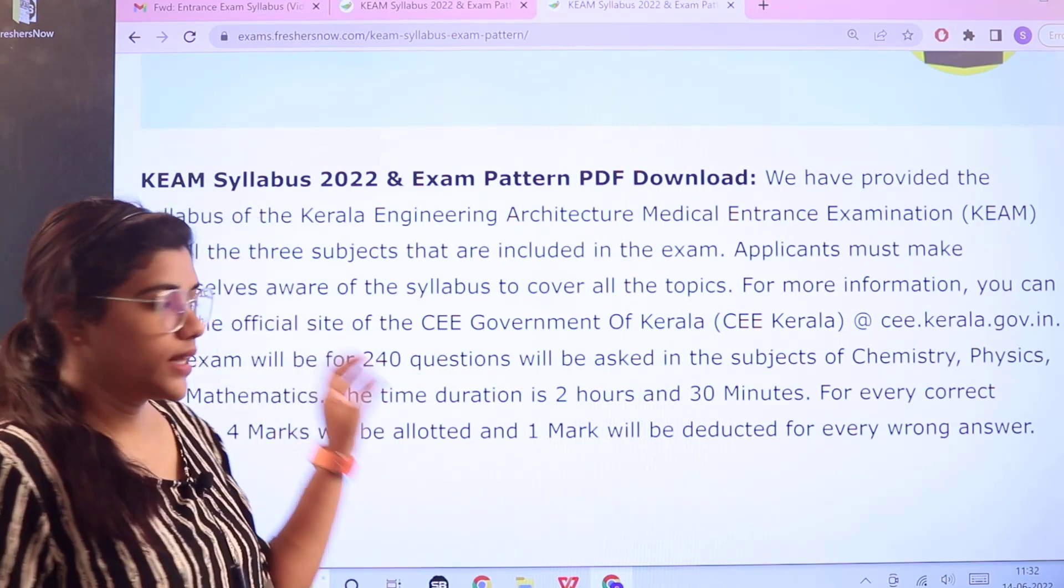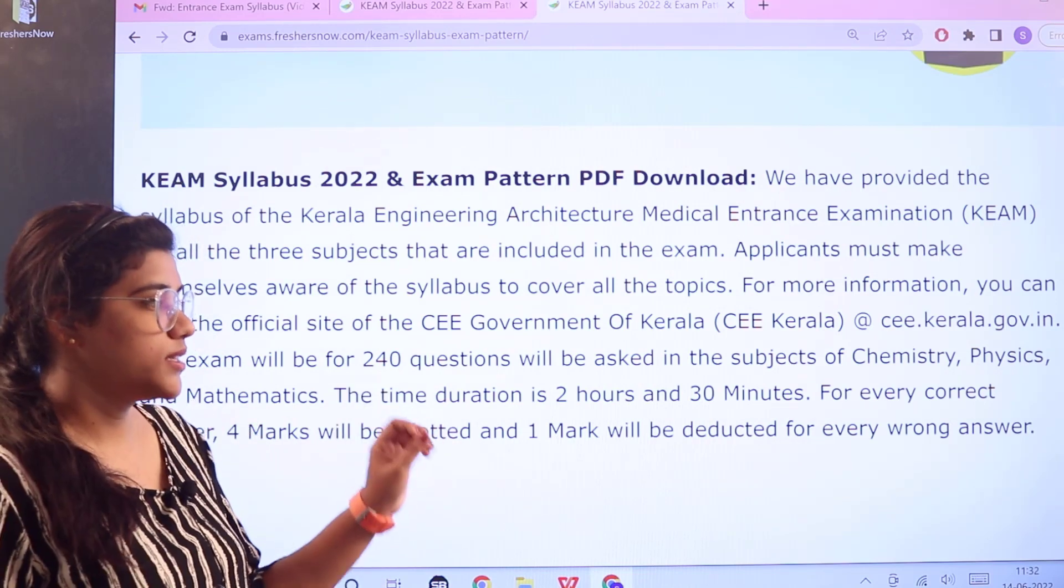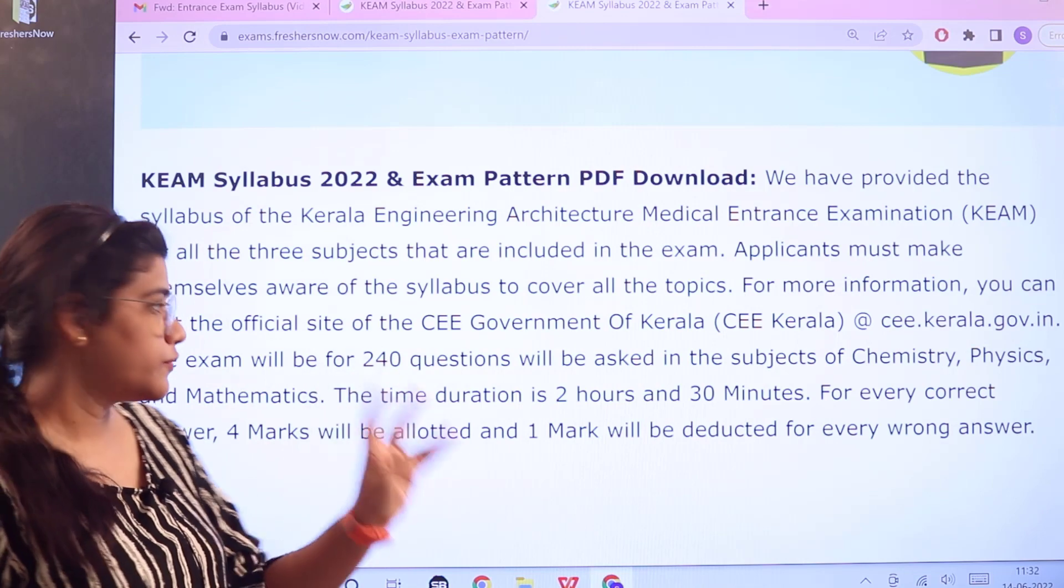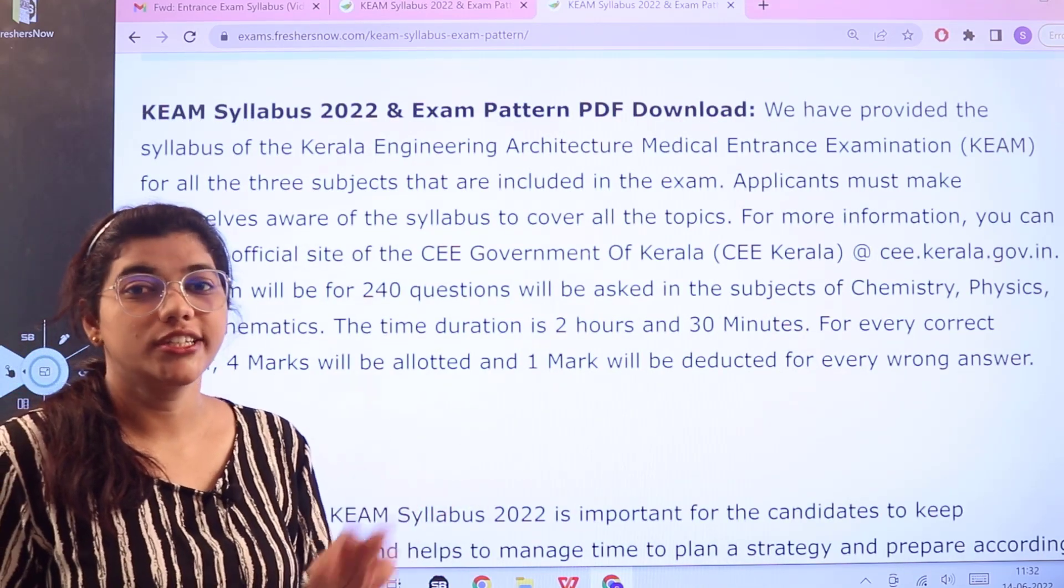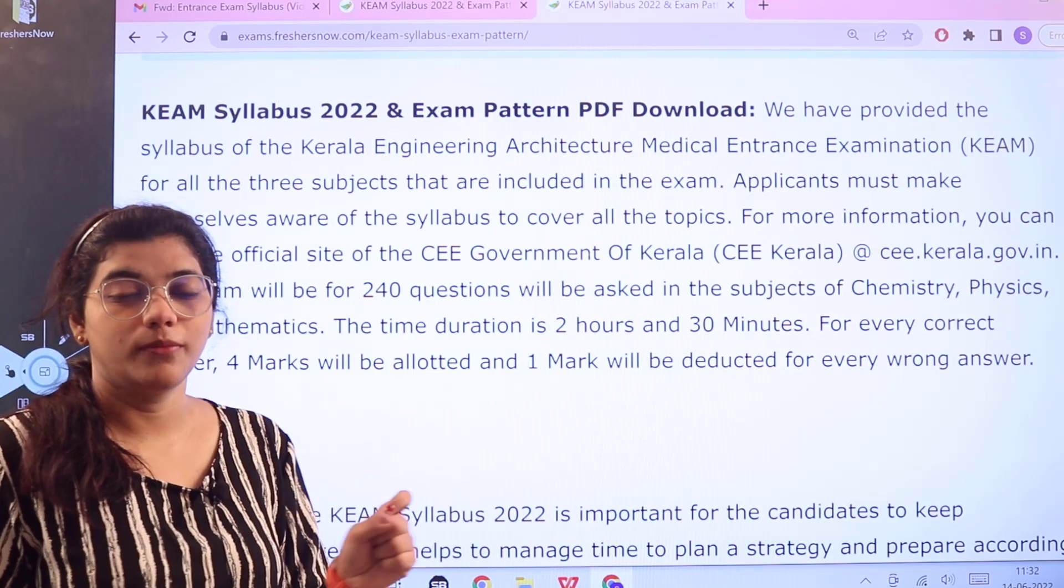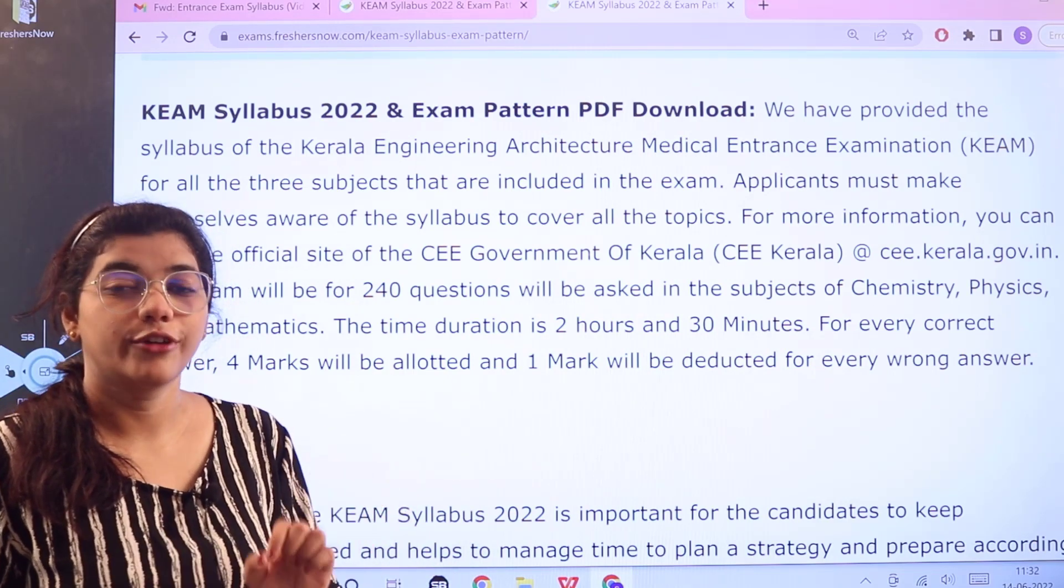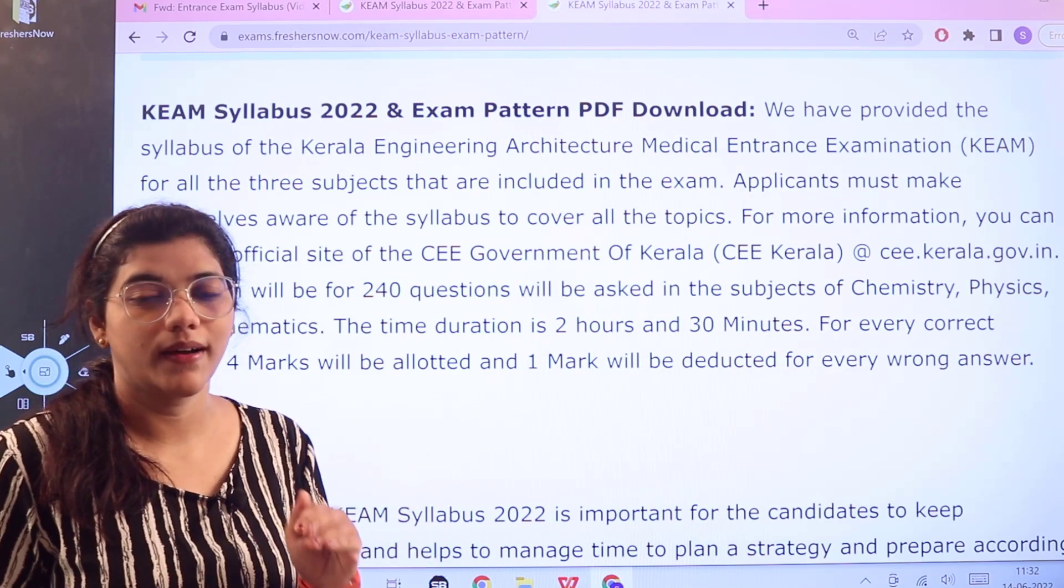The whole examination will consist of 240 questions from the subjects of chemistry, physics, and mathematics. The time duration of the examination is 2 hours 30 minutes. For every correct answer you would be awarded four marks, and for every wrong answer there would be one mark deducted, so there is negative marking of one mark.